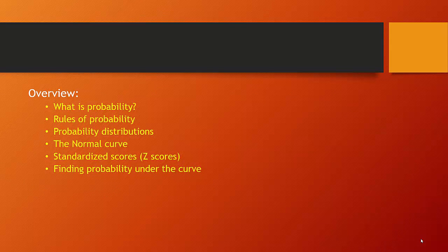To begin with, we want to talk today about what probability is, and to do that we're going to start with some basic rules of probability, and think about how those rules help us understand probability distributions. That'll lead to a discussion about the normal curve, the normal distribution, and standardized scores, which will tell us how far away from the mean any observation is, and tell us the probability of that outcome under the normal curve. And finally, we're actually going to try and find some probabilities under the normal curve.